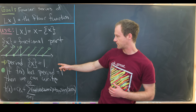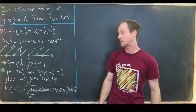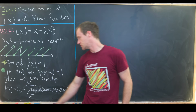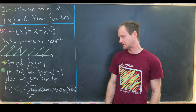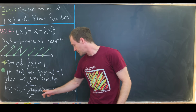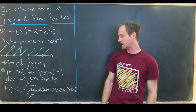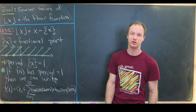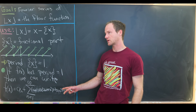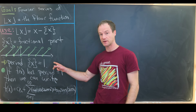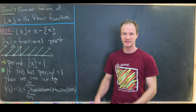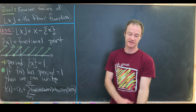We'll use the fact that if we have a function f(x) with period one, we can write it as a sum of trigonometric functions: a constant a₀, plus the sum as n goes from one to infinity of aₙ cosine(2nπx) plus bₙ sine(2nπx). This is a special case of the Fourier series based on having a period of one, and it may look a little different than what you've seen before.